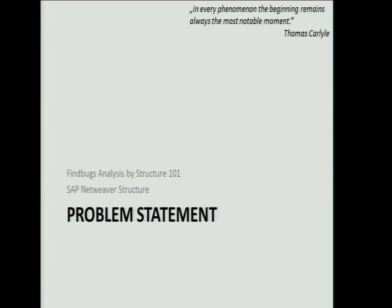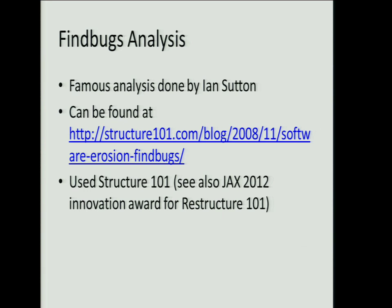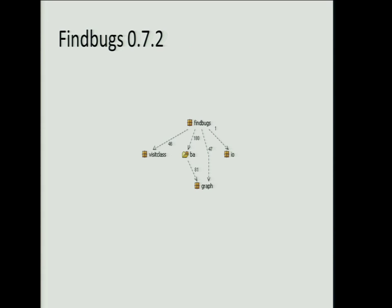He will focus on two aspects of the modernization topic in OSGI, especially regarding Java. The first aspect is a famous analysis done by the Structure 101 team. Structure 101 is an architecture check tool that can analyze an existing code base or define a model for how a new product's architecture should look. They used it to analyze FindBugs.